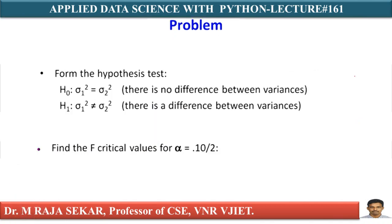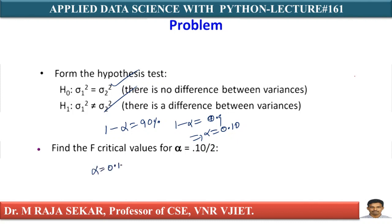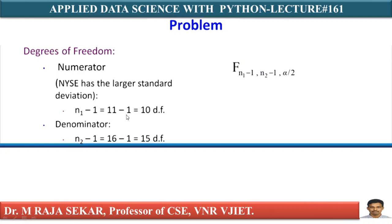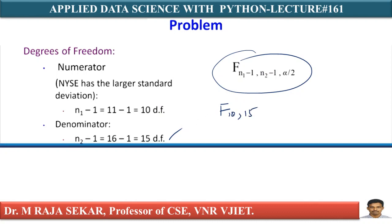There is a simple formula. The null hypothesis is sigma 1 squared equal to sigma 2 squared, and the alternative hypothesis is not equal. The confidence level 1 minus alpha equals 90%, which is 0.9, so alpha equals 0.10. Since this is a two-tailed test, we use alpha by 2, which is 0.05. Numerator degrees of freedom: N1 minus 1 equals 11 minus 1 equals 10. Denominator degrees of freedom: N2 minus 1 equals 16 minus 1 equals 15. So F has degrees of freedom 10 and 15, and alpha by 2 is 0.05.